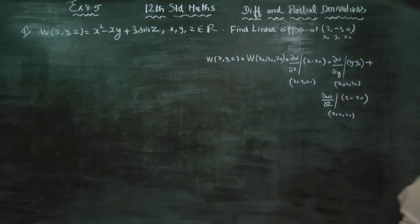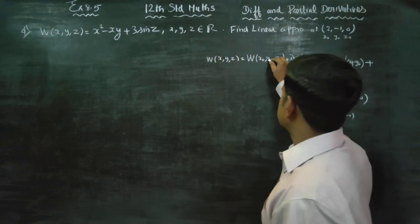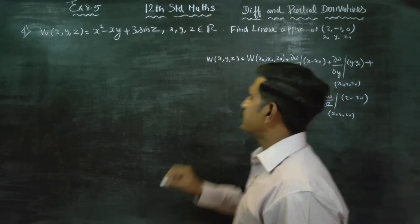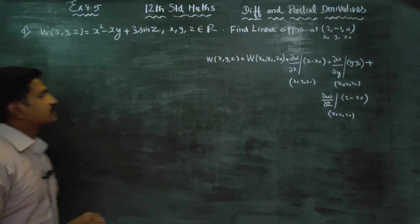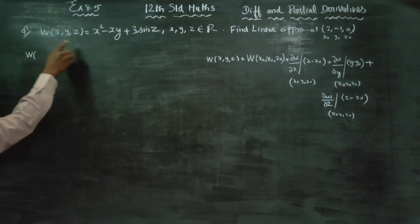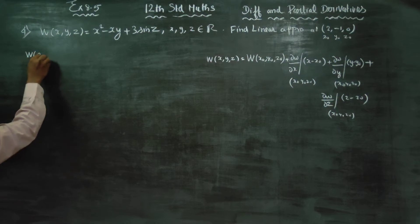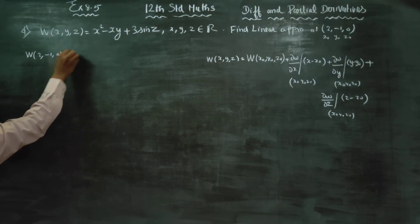You will get the linear approximation of W(x, y, z) at (2, minus 1, 0). So first we will start our process of finding W(x₀, y₀, z₀), that is W(2, minus 1, 0). Substitute the point values.